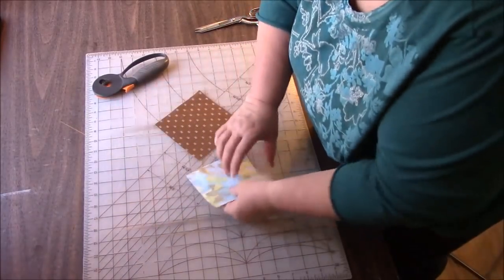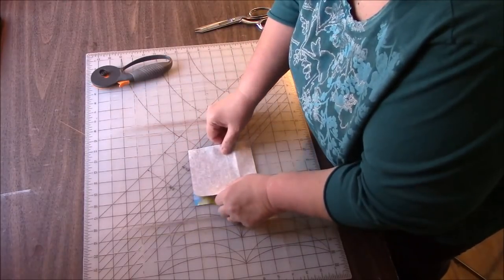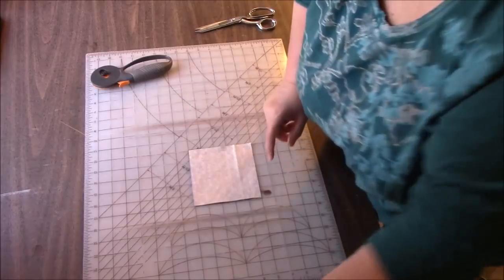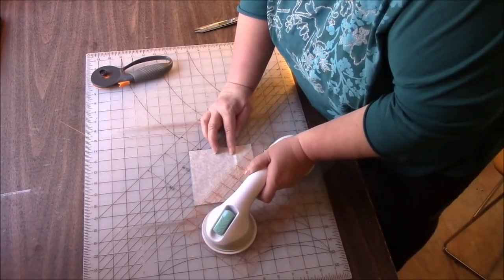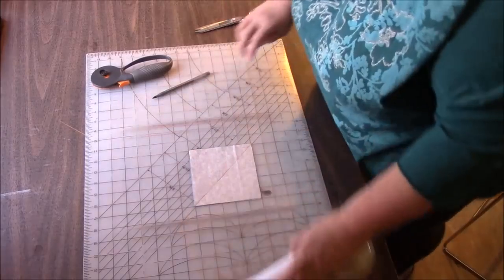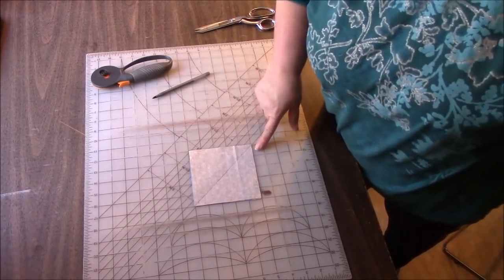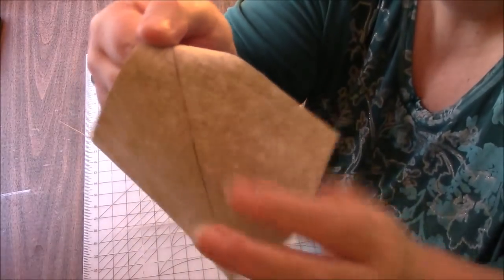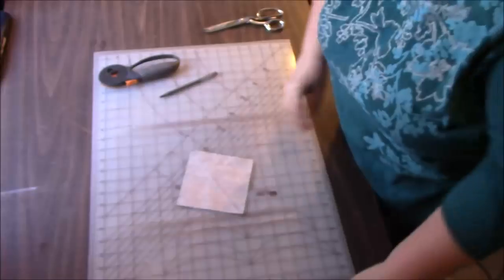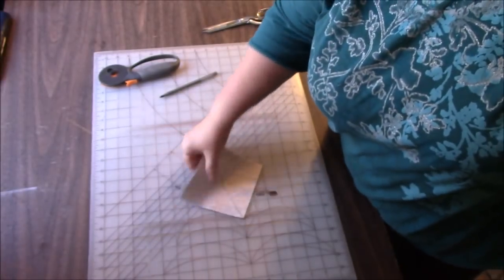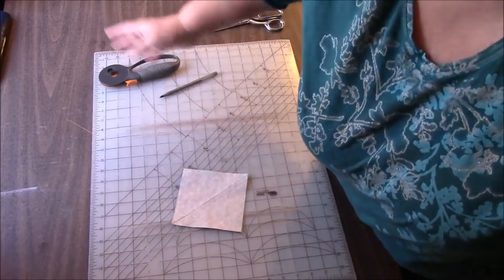Now let's make our two half square triangles. So we want right sides together. We're going to draw a line on the diagonal, corner to corner, and we're going to sew on each side of the diagonal. I just put my foot along the line and use that as a guide. And I like to press mine while it's flat like this to relax that thread. You don't have to do that.